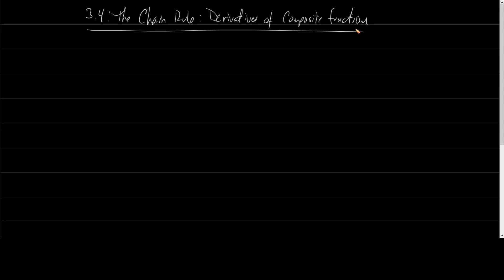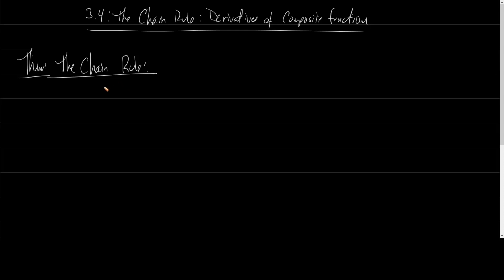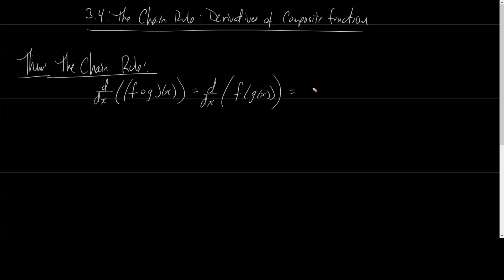Let's start first with what the chain rule is. This is the theorem, and this is the chain rule. If I have the derivative with respect to x of f composed with g of x — I'm just going to rewrite this as the derivative with respect to x of f of g of x — that's going to be f prime of g of x times g prime of x.